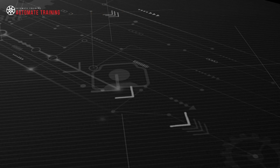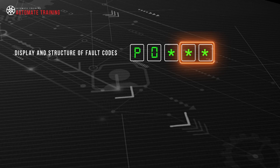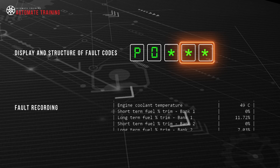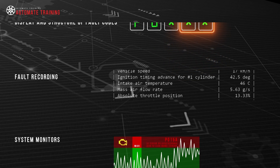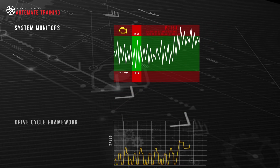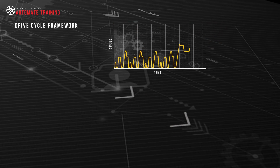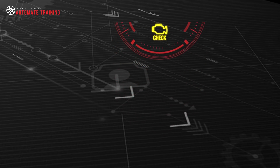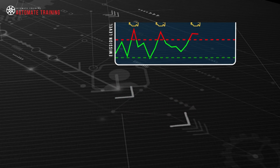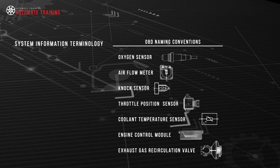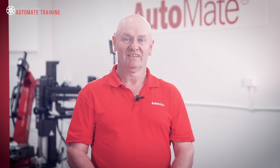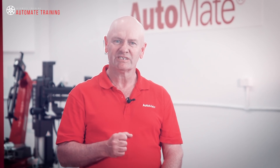The key elements that we will be focusing on include the display and structure of fault codes, fault recording via freeze frame data, monitors and criteria for components and system faults, controls, vehicle drive cycle framework, driver fault notification, vehicle emission levels, and components and system information terminology and access to service information and calibrations. Let's take a closer look at these particular key elements.